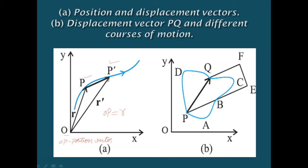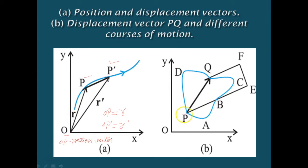Point P' is represented by another position vector. P' is the position at time T', so we join O and P', and that OP' is represented by R'. This OP' is the position vector at time T'. The length of vector R represents the magnitude of the vector, and its direction is the direction in which P lies as seen from O. R represents the magnitude, and the arrow represents the direction.